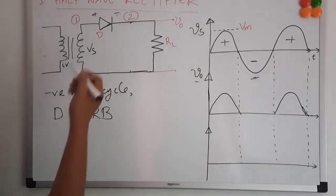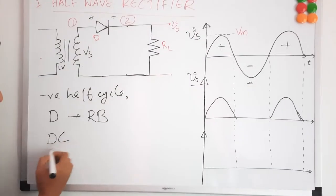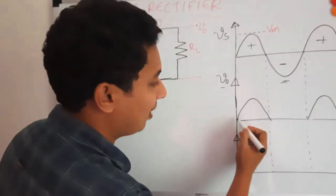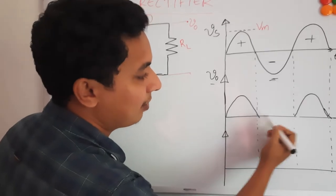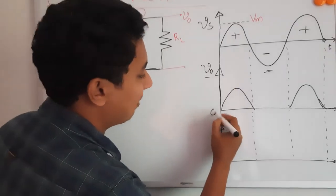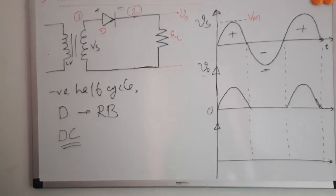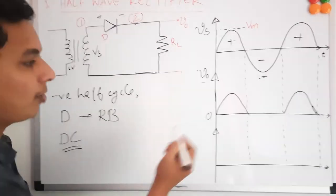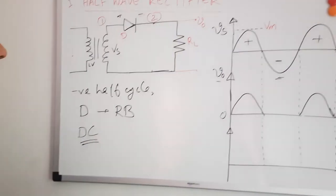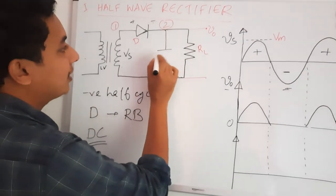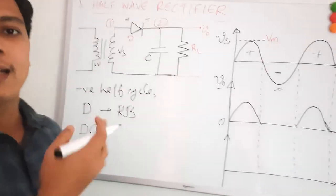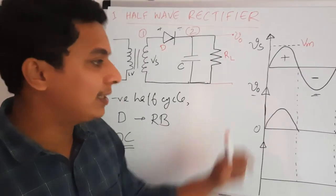What is the problem with this? Our aim is to have a high voltage DC supply, but using a half-wave rectifier we will have only pulsed DC — during the positive half-cycle we have output, during the negative half-cycle we don't. You want a more or less constant DC supply. For that, we connect a capacitor across the load, also called a smoothing capacitor.